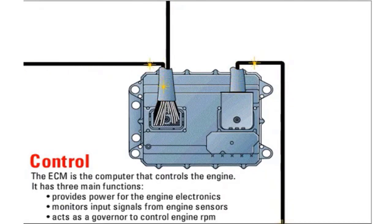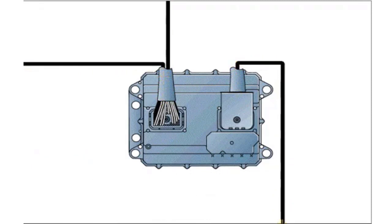The ECM is the computer that controls the engine. It has three main functions: it provides power for the engine electronics, it monitors input signals from engine sensors, and it acts as a governor to control engine RPM.